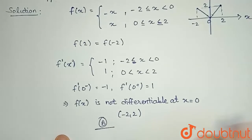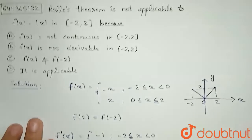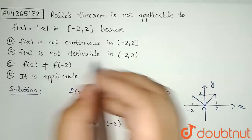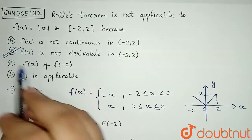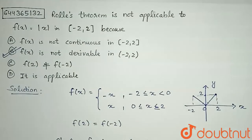That means my option B will be the correct answer. We can see here also in the option that f(x) is not derivable in minus 2 to 2, which is option B, will be our correct answer. Thank you.